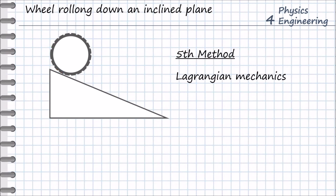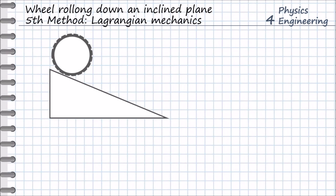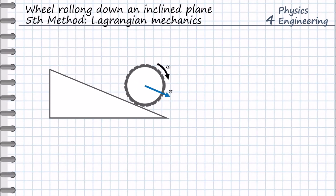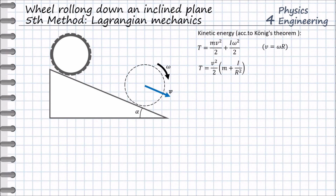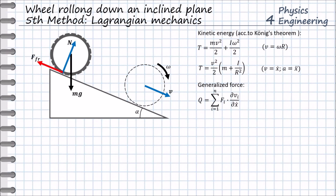The fifth method is Lagrangian mechanics. The rolling body has linear velocity and angular velocity. First, we write the kinetic energy of the wheel, which by the second part of König's theorem is the sum of the energy of linear motion and spinning motion of the rolling object. Using the relation between linear and angular velocity, we rewrite the kinetic energy in simplified form. The next step is to define the generalized force. Looking at the forces acting on the wheel: since the contact point has zero velocity, the friction force does no work on the wheel and is not part of the generalized force.